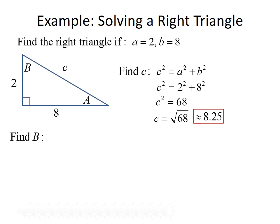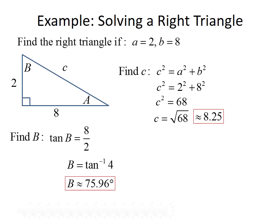Now let's find angle B. We want to work with the given values of 8 and 2. In relation to angle B, 8 is the opposite side and 2 is the adjacent side, so we use tangent: tangent of B equals 8 over 2, which equals 4. To find angle B, we take the inverse tangent of both sides, so B equals the inverse tangent of 4, which is approximately 75.96 degrees.